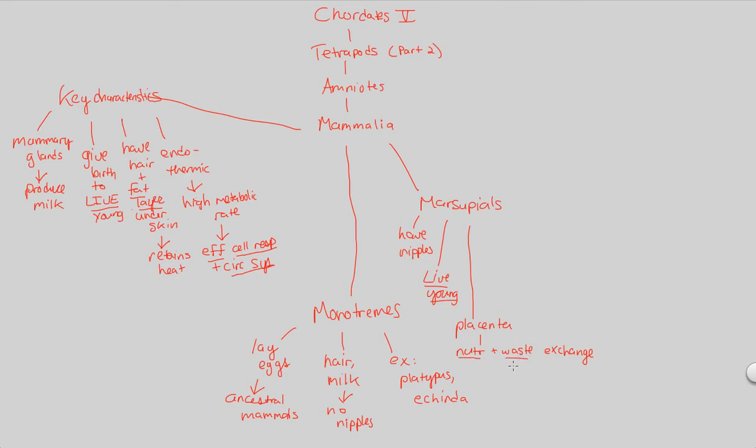But the placenta is basically that replication of that idea that there's going to be nutrients and also waste that this growing embryo needs and produces. And so there's going to be an exchange point through the placenta between the mother and the embryo. So that's a big characteristic that these marsupials are the first ones to develop. Mother and embryo, nutrient and waste exchange through the placenta, allowing the birth of live young.